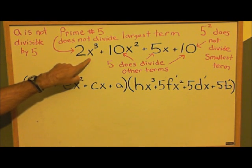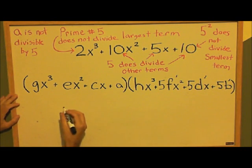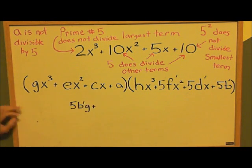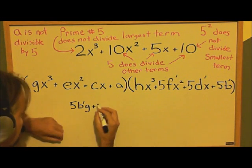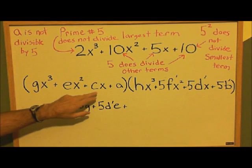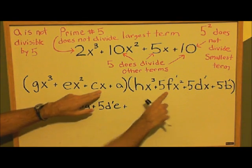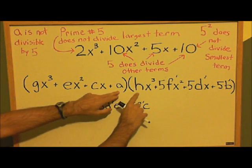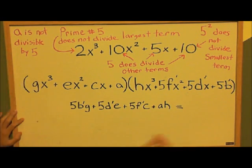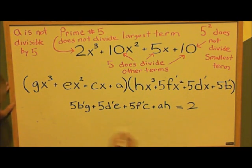Okay, now we'll do the x to the third term. We have gx to the third times 5b prime, we have ex squared and 5d prime x, we have cx and 5f prime x squared, and we have a times h. This equals 2. So now let's group together all the fives.